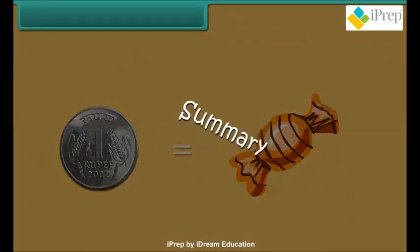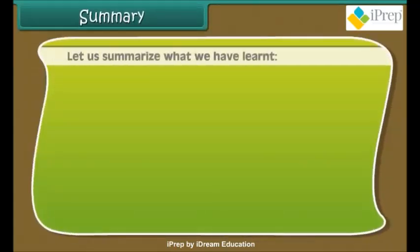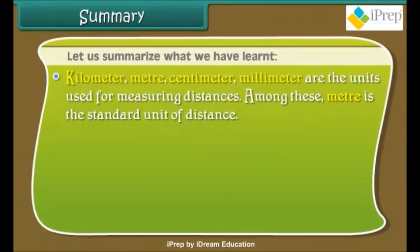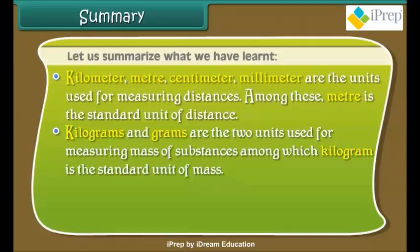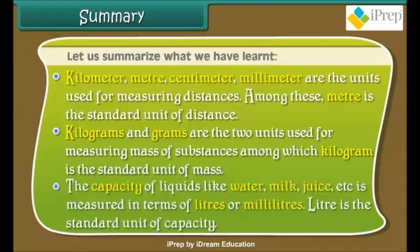Summary. Let us summarize what we have learned. Kilometer, meter, centimeter, millimeter are the units used for measuring distances. Among these, meter is the standard unit of distance. Kilograms and grams are the two units used for measuring mass of substances, among which kilogram is the standard unit of mass. The capacity of liquids like water, milk, juice is measured in terms of liters or milliliters. Liter is the standard unit of capacity.